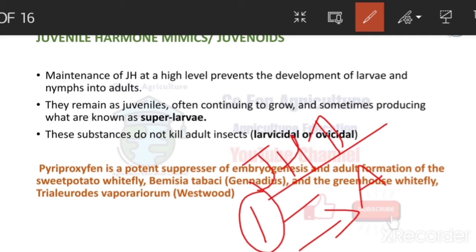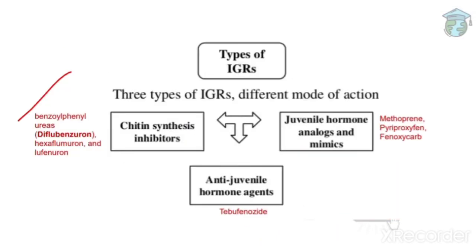If insects remain in the larval stage permanently, we call them super larvae. Juvenile hormone analogues won't kill adults - they only affect larvae and eggs, so we call them larvicidal or ovicidal. Examples include methoprene, pyriproxyfen, and phenoxycarb. Pyriproxyfen is a potent suppressor of embryogenesis and is used against sweet potato whitefly (Bemisia tabaci) and greenhouse whitefly (Trialeurodes vaporariorum).